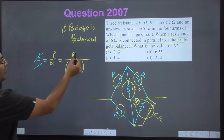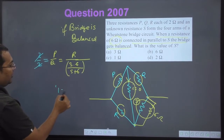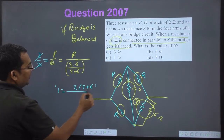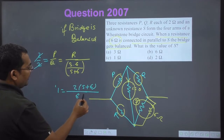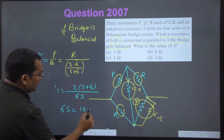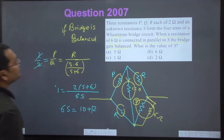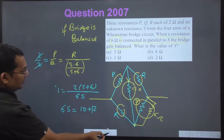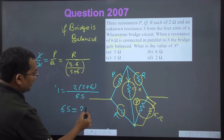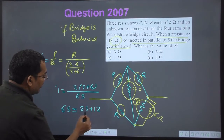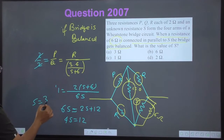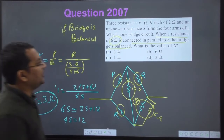P/Q = 1, so the left side is 1. On the right side: R divided by (6S/(S+6)) equals 2(S+6)/(6S). Setting this equal to 1: 2(S+6) = 6S, giving 2S + 12 = 6S, so 4S = 12, and therefore S = 3 ohm.